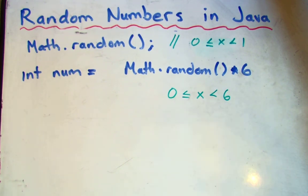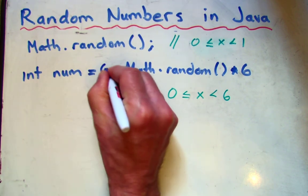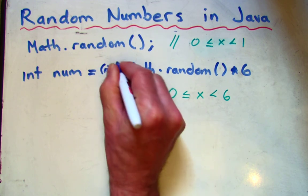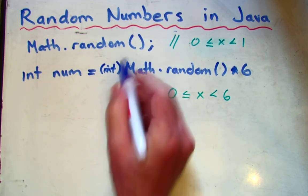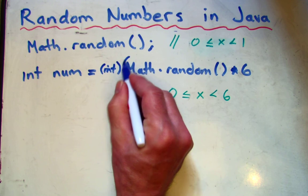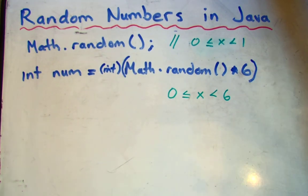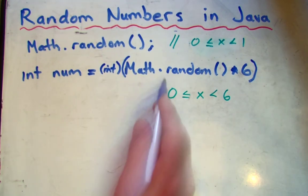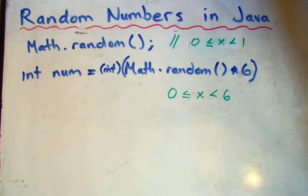Now, if we want integers, because those are still real numbers, all we need to do is cast it to an int. Put int there, and we want to be careful to put brackets around this whole thing. Otherwise, it's just casting this, which would always result in a 0.